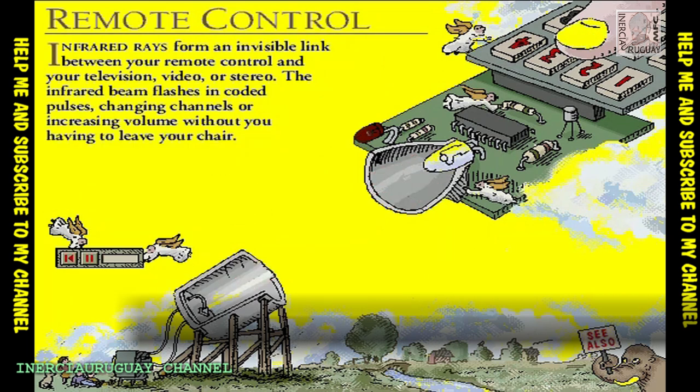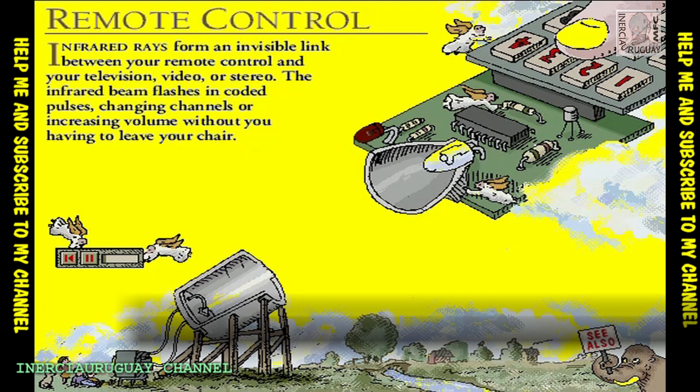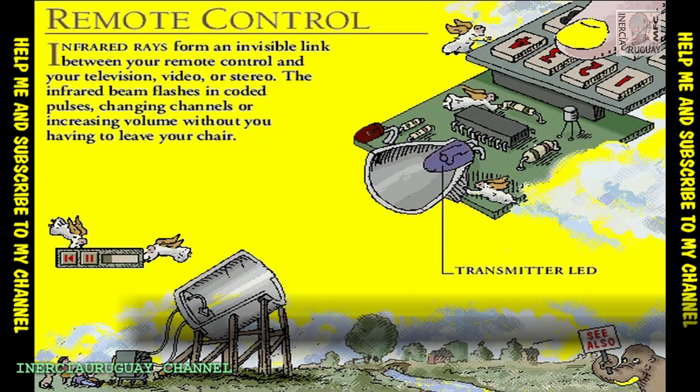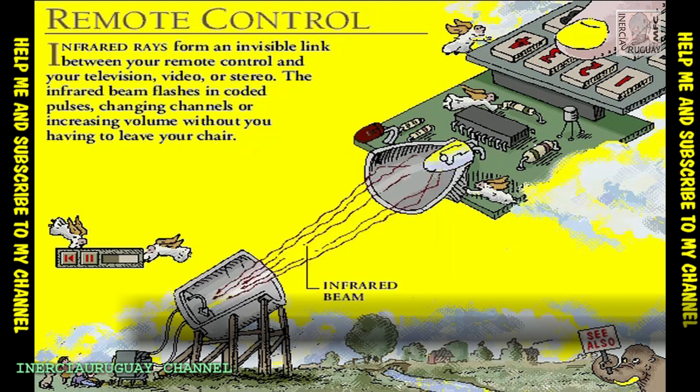When you press a button on the remote control to change television channel, for example, the microprocessor sends a pulse signal to the transmitter LED. The LED changes the pulses of electricity into pulses of infrared light, which travel across the room.